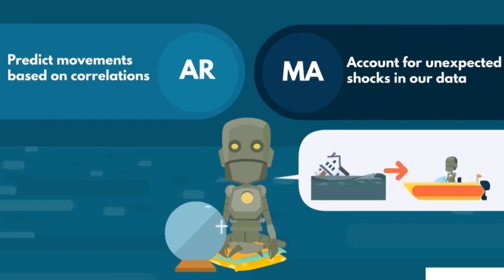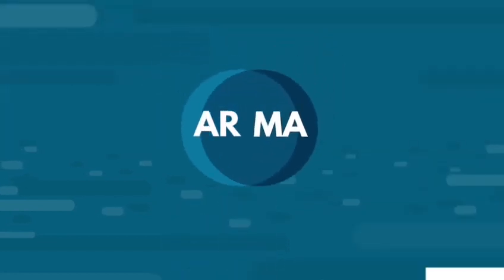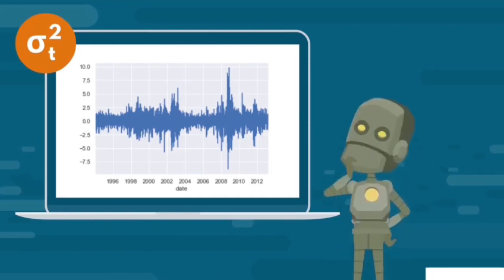You'll quickly realize that autoregressions and moving averages are not enough for most problems. That's why we'll combine them to reach the autoregressive moving average model, known as ARMA. Then, we'll deal with stationarity issues by introducing the autoregressive integrated moving average model, or ARIMA. And we'll finish off with the most complicated of this family, ARIMAX.